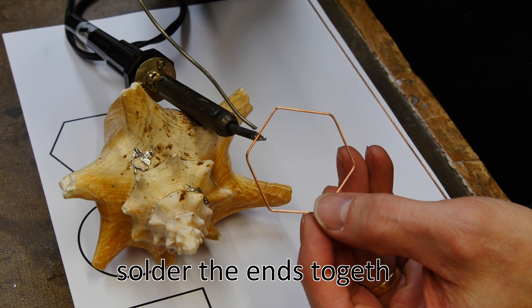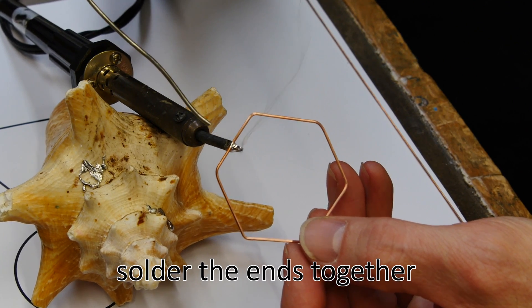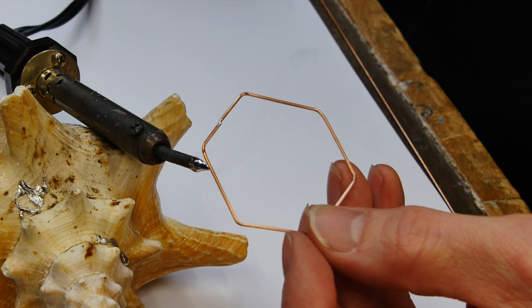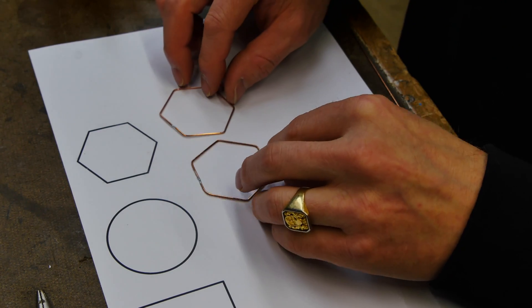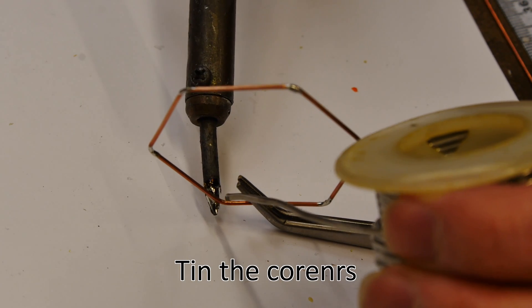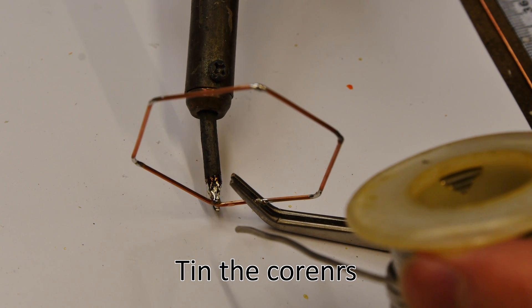And here I'm using a pair of flush cut cutters to cut through both pieces at the same time so I can get a nice clean cut. You get a little bit of a gap there but we're gonna heat up the copper and we're gonna fill that in with the rosin core solder. The rosin core has basically the flux built into it and that allows the solder to flow.